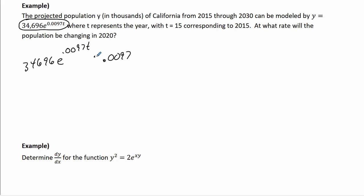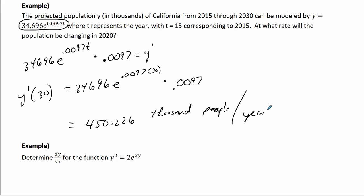This here is your derivative, equals y prime. And I need to find out the value at 30. So I'm finding y prime at 30 equals 34696 e to the 0.0097 times 30 times 0.0097. That's a calculator problem, which equals 450,226,000 people per year. So 450,000 people a year are going to be either moving to California, being born in California, but that's how much it's increasing.